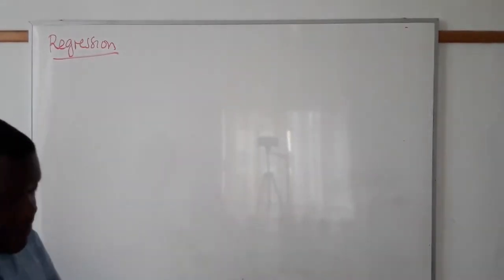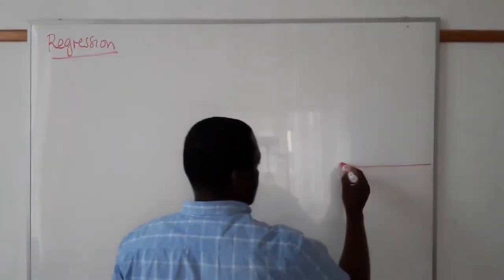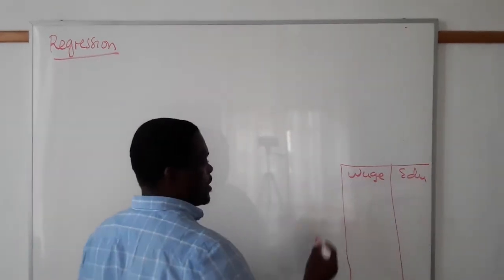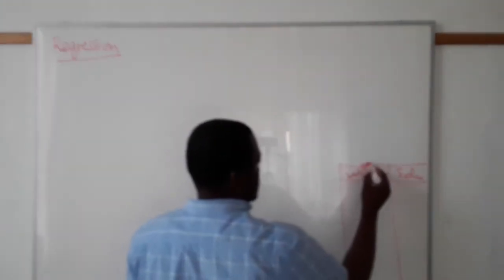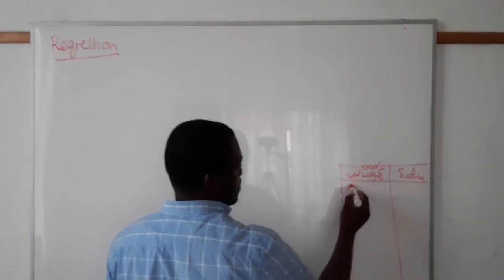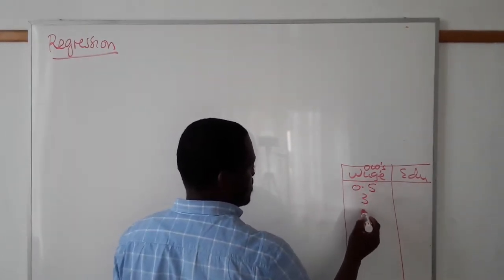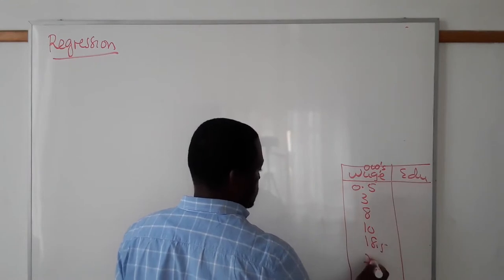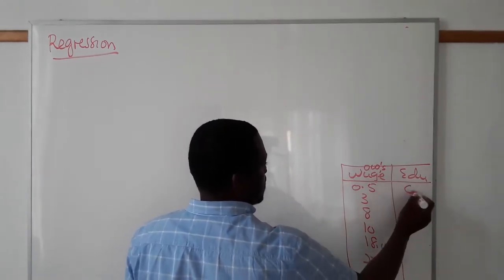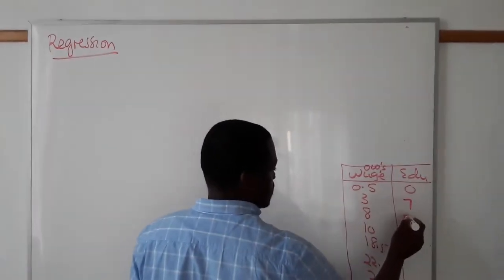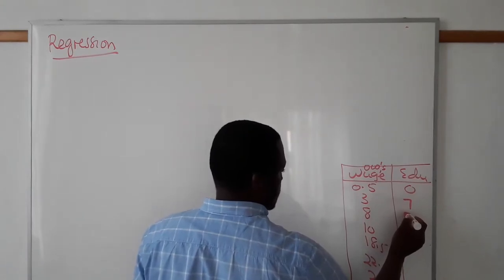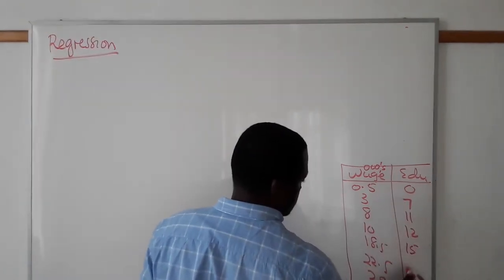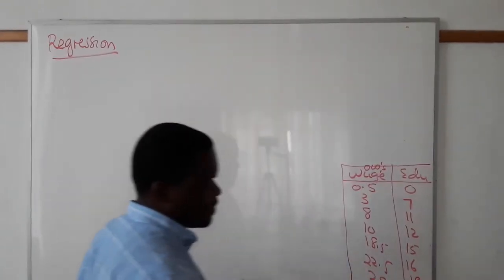If you have a set of data — let's say this is your data — this is your wage and this is your education, using the example we were working with yesterday. Wages expressed in thousands: 0.5, 3, 8, 10, 18.5, 22.5, 29. Education: no education, 7 years, 7 years, 11 years, 12 years, 15 years, 16 years, 18 years of education.